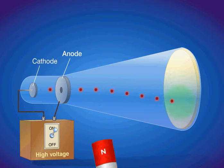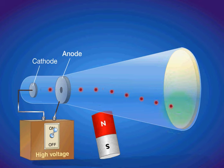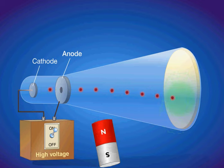As expected, when the direction of the external magnetic field is reversed, the beam of electrons is deflected in the opposite direction.